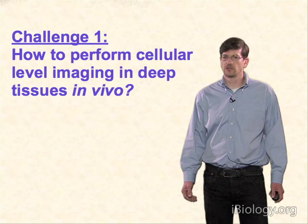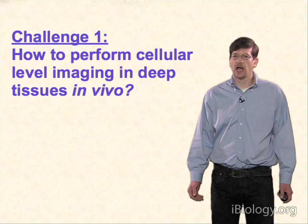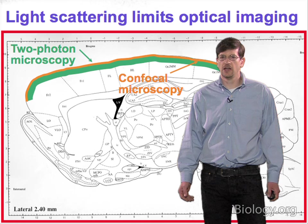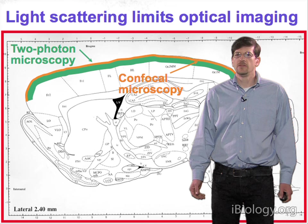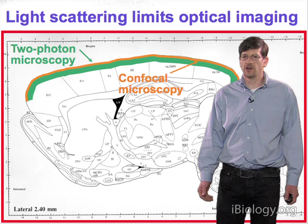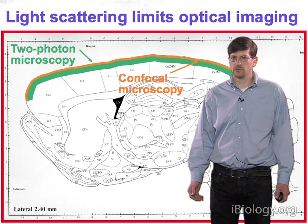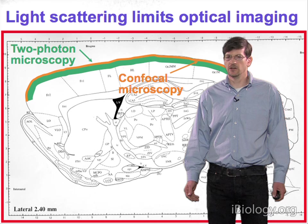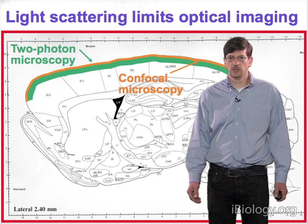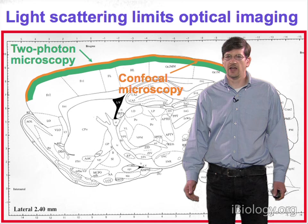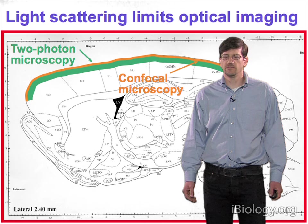The first technical challenge is how to perform cellular-level imaging with micron-scale resolution in deep tissues in vivo — meaning in the live mammalian brain. Light scattering is the chief impediment, not light absorption. Conventional confocal fluorescence microscopy can observe cells in approximately the outer 50 to 100 microns of tissue. The two-photon fluorescence microscope can penetrate about 500 to 700 microns deep into brain tissue, but the vast majority of the mammalian brain lies out of reach of these conventional techniques.